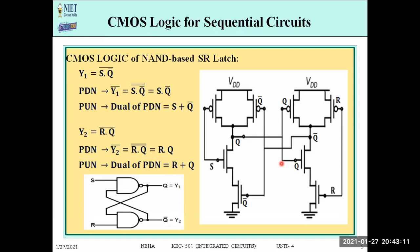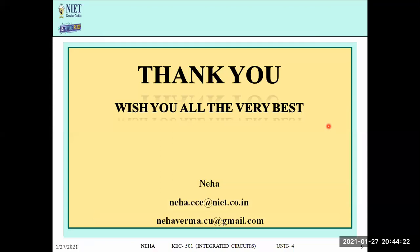Our SR latch was designed using NAND gates and this is the CMOS logic design. When designing CMOS logic for latches or flip-flops, we must keep in mind that latches and flip-flops are bi-stable circuits with two outputs. So we get two Boolean expressions, design two separate circuits, and combine them for the final output — connecting Q to Q and Q-bar to Q-bar. This is the complete circuit diagram for CMOS logic of the NAND-based SR latch. If you have any query, post your question in the comment box. Thank you so much.